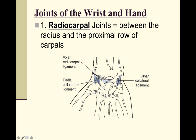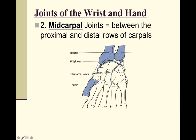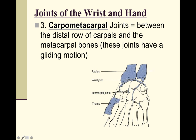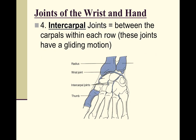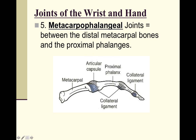Labeling the joints from proximal to distal: the radiocarpal joint is between the radius and the scaphoid and lunate. Next is the midcarpal joint between the first and second rows of carpals. Then the carpometacarpal joint between the carpals and the metacarpals. There are also intracarpal joints among the eight carpal bones, all involving gliding motion.